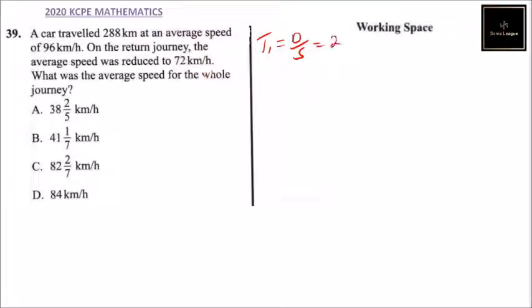So the distance here is 288 and the speed was 96. So you divide 288 by 96. When you divide this, you can simplify by 4, and you get 3 hours.